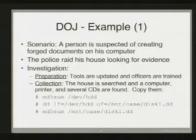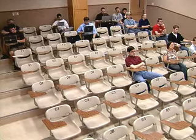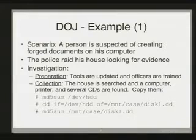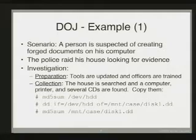Here's an example scenario: a person suspected of creating forged documents — check forgery or identification forgery — using their computer. We get our police, search warrant, and raid the house. Preparation: tools updated, people trained and certified. Collection: we go through the house and find computers, printers, and several CDs. We can take them all back to the lab or make copies of them.